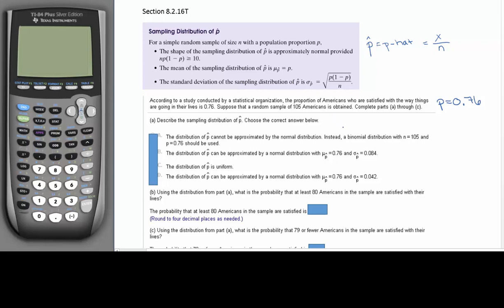It says describe the sampling distribution of p-hat. Well, to see if it is approximately normal, we have to see if N times P times 1 minus P is greater than or equal to 10. Well, N is our sample size. It tells us we have 105.